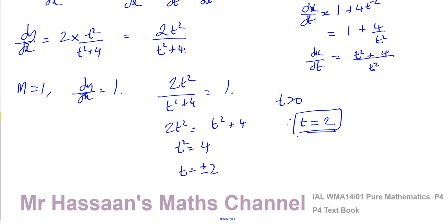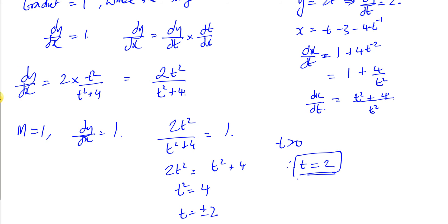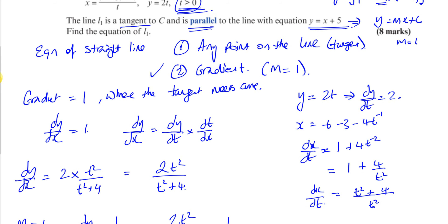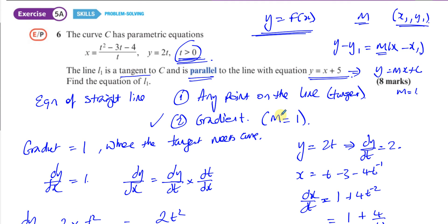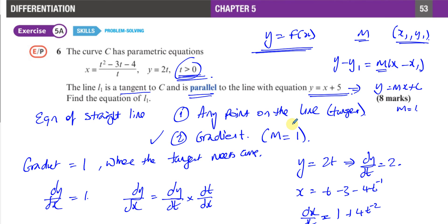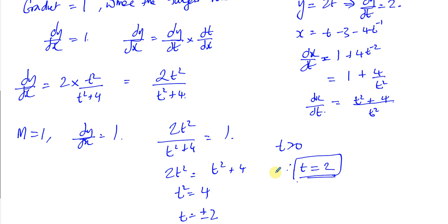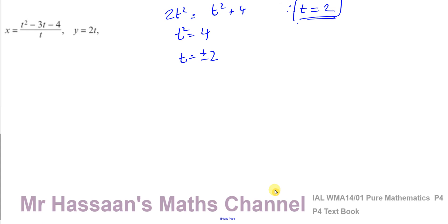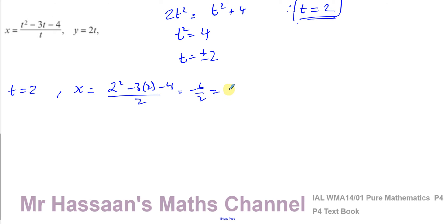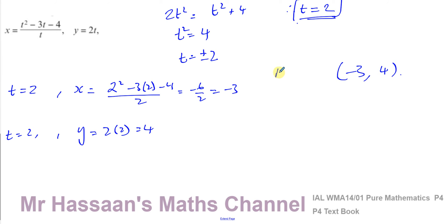Now we need the coordinates of the point where t equals 2. Substituting into the original equations: x equals 2 squared minus 3 times 2 minus 4 over 2, which gives 4 minus 6 minus 2, equaling minus 3. And y equals 2 times 2, which equals 4. So the point where the gradient equals 1 is (minus 3, 4).